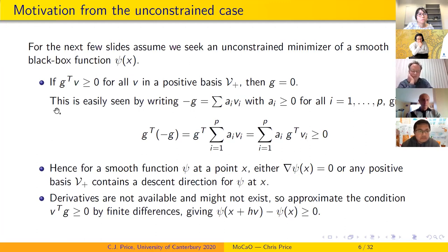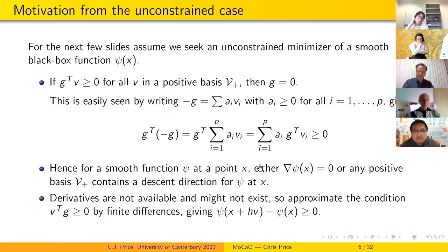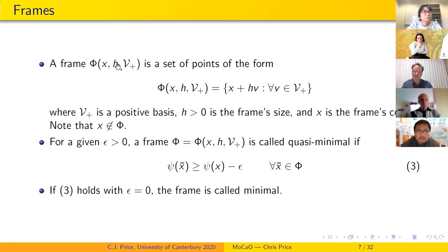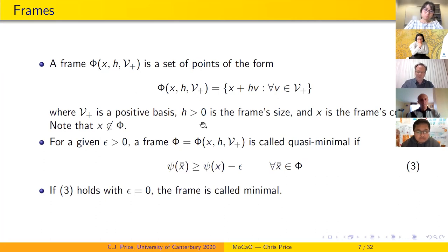In practice, since we can't access the gradient, we replace the condition g^T·v ≥ 0 with finite differences: psi(x + hv) − psi(x) ≥ 0 for all v in the positive basis and some positive scale factor h. This leads to the idea of a frame — a set of points surrounding a center point x. The frame consists of all points x + hv where v ranges across the positive basis, with h as the step size.